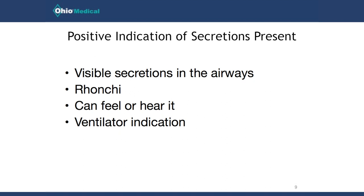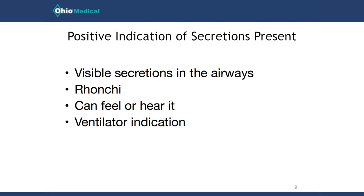We should have a positive indication that secretions are present. A few of those include: if you can actually see secretions in the airway when the patient coughs; if you listen with a stethoscope and hear ronchi or coarse crackles that sound almost like snoring, indicating secretions in the upper airway; if a physician requires a sputum sample for culture and sensitivity; or if you can feel or hear secretions without a stethoscope, or see choppy flow scalars on the ventilator graphics. If you don't have those indications, we should not suction on a routine basis.